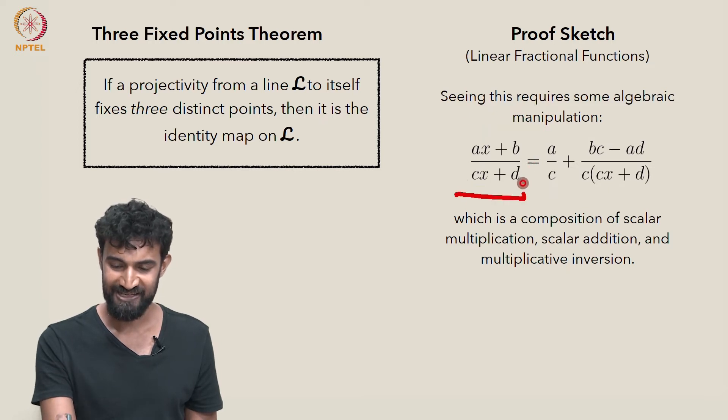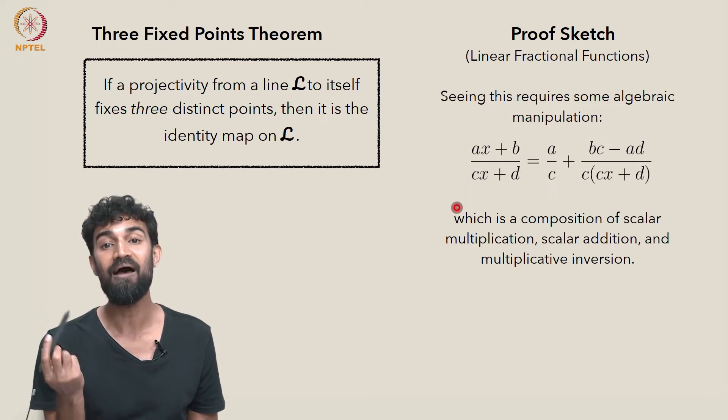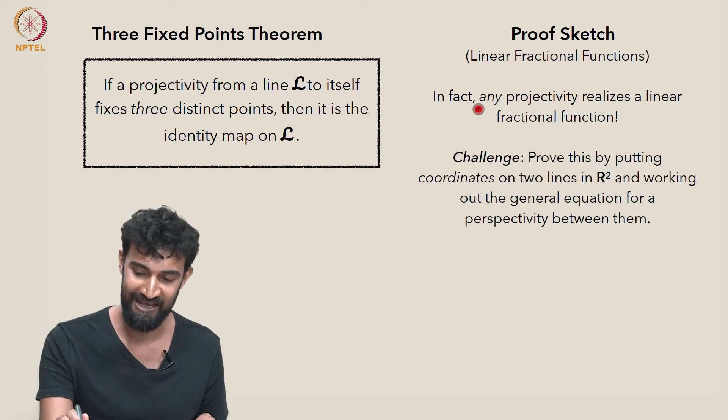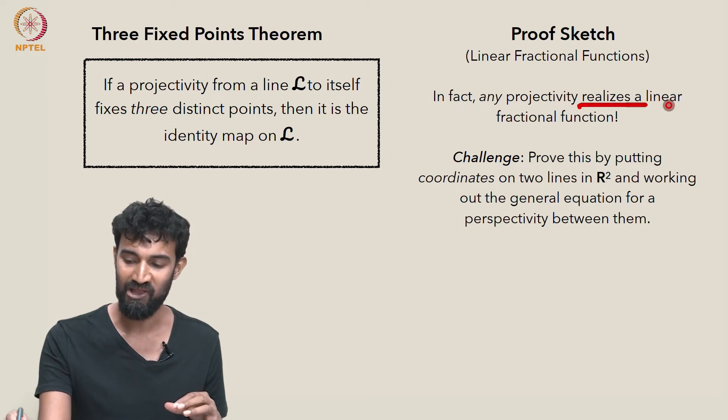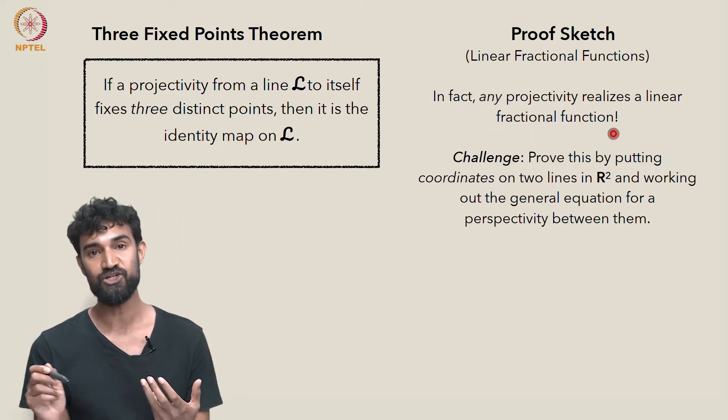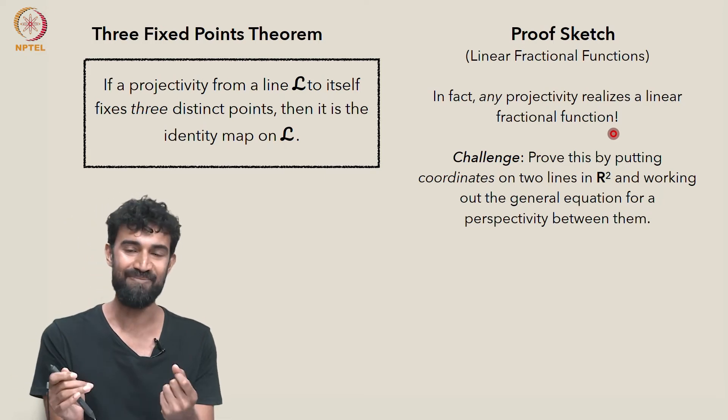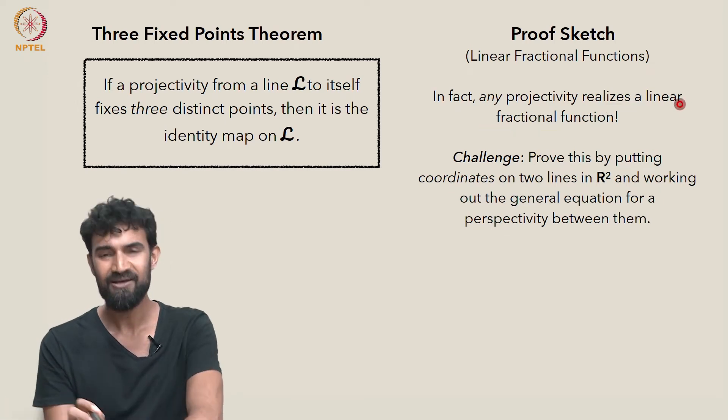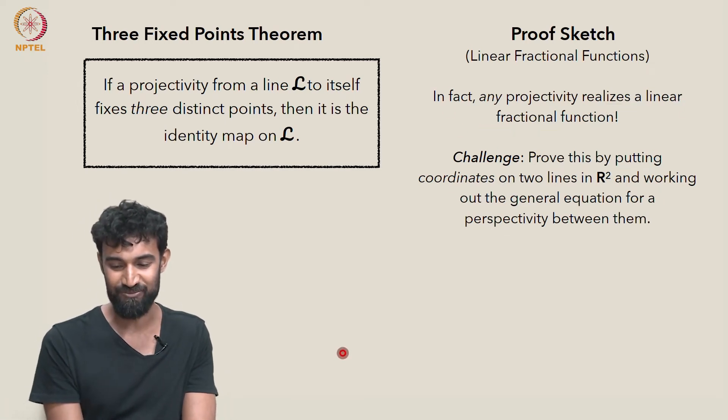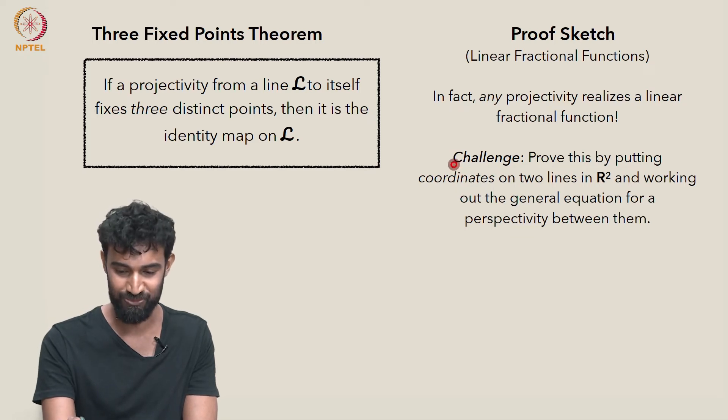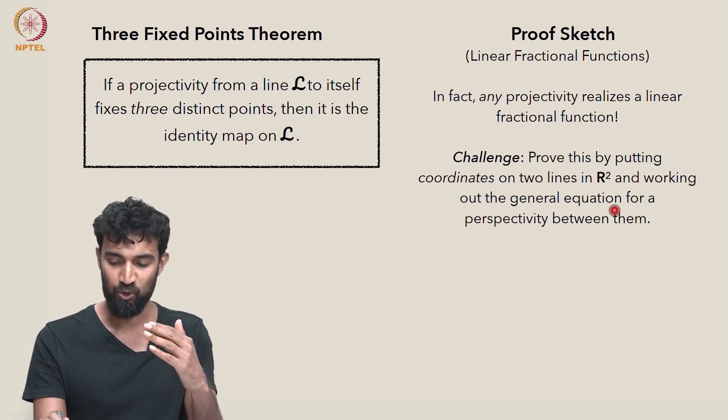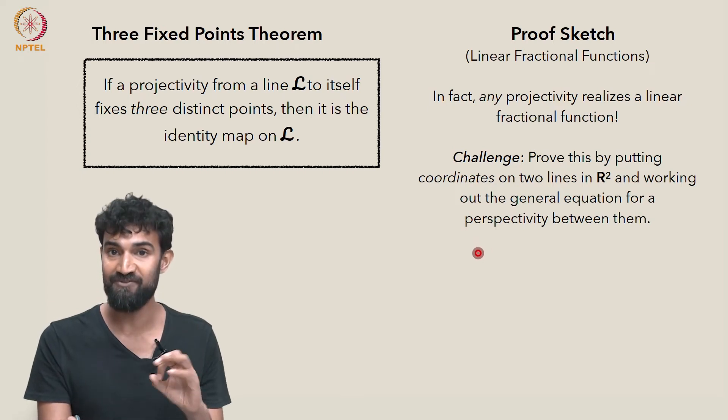But what's a little harder to see is that any projectivity will realize some linear fractional function. They're actually one and the same. Projectivities from the real line to itself are the linear fractional functions. So this is the sketchiest part of the proof. I'm leaving this as a challenge. Prove this by putting coordinates on two lines in R² and working out a general equation for a perspectivity between them.